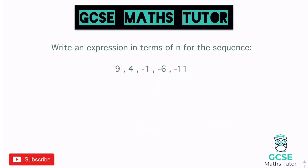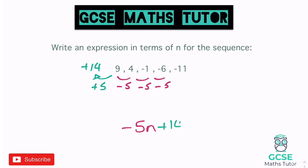Same process for the next decreasing sequence: 9 to 4 is −5, 4 to −1 is −5, and it keeps going down by 5. So we write −5n, and going backwards we add 5, giving us 14. The nth term is −5n + 14, or written the other way, 14 − 5n. Both are correct and mean the same thing.